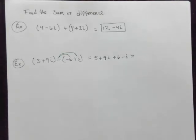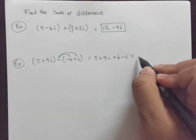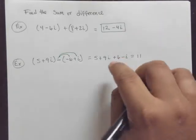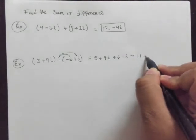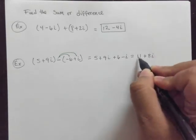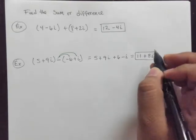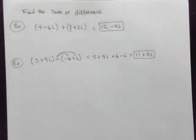And in this case, we get 5 plus 6, which is 11. And then 9i minus i gives us, so 9 minus 1 is a positive 8i. And so this right here is the difference of this set of complex numbers.